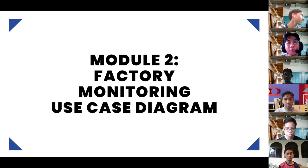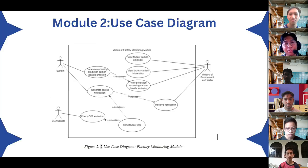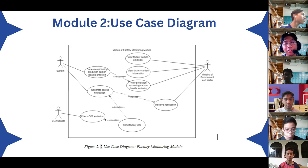Next is module two: factory monitoring use case diagram. As you can see on the diagram, there are three actors — the Ministry of Environment and Water, CO2 sensors, and the system. You can see the relationship between the use cases.